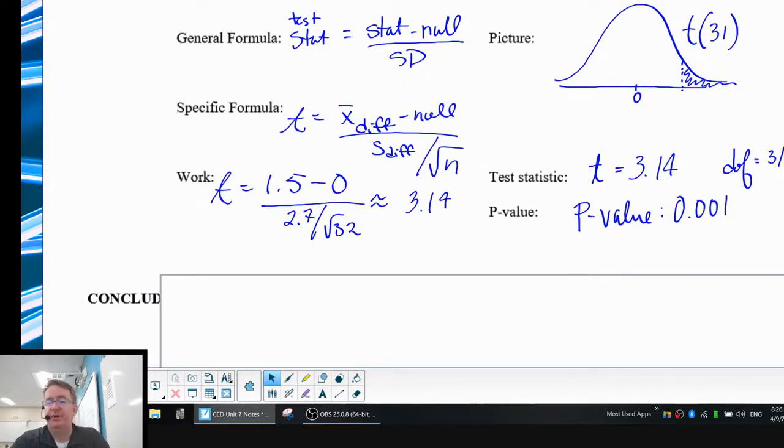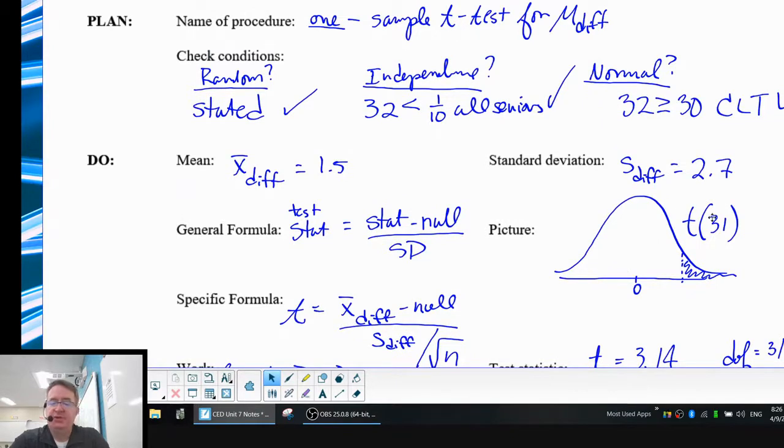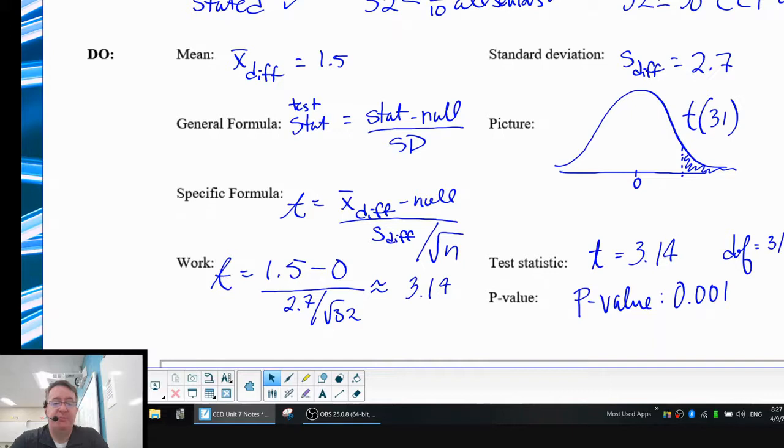In terms of your picture, normal curve, or it's a t-curve, 31 because we have 32, degrees of freedom is always one less. For your specific formula, t is going to be x-bar difference minus your null divided by, you may have to remember for your standard deviation that we're using in the t-statistic. It's not just the standard deviation of what we found, but we also have to then divide it by the square root of the population. The reason for that is because the more the population is, the more the curve tightens up. A standard deviation of 2.7 is different for a group of five people than a group of 20 people.